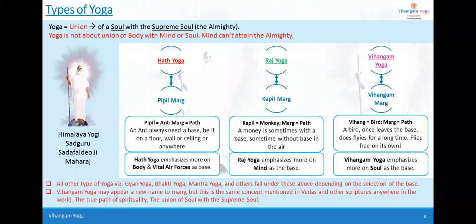Each type has a different philosophical basis. One is called Pipil Marg — pipil means ant and marg means path. One is Kapil Marg — kapil means monkey and marg means path. And one is Vihangam Marg — vihag means bird and marg means path. Three animals or creatures have been chosen to compare these three paths.